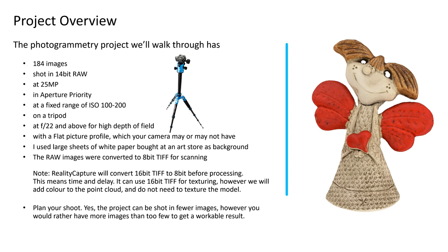I shot at f22 and above for sharpness from foreground to background with minimal blur. I used a flat picture profile, which your camera may or may not have. A flat profile creates low contrast, high dynamic range images. According to Nikon, artificial manipulation of colour and brightness are minimised — subject information is retained as much as possible and faithfully reproduced. Large sheets of white paper bought at an art store were used as background, with A4 sheets under the object.